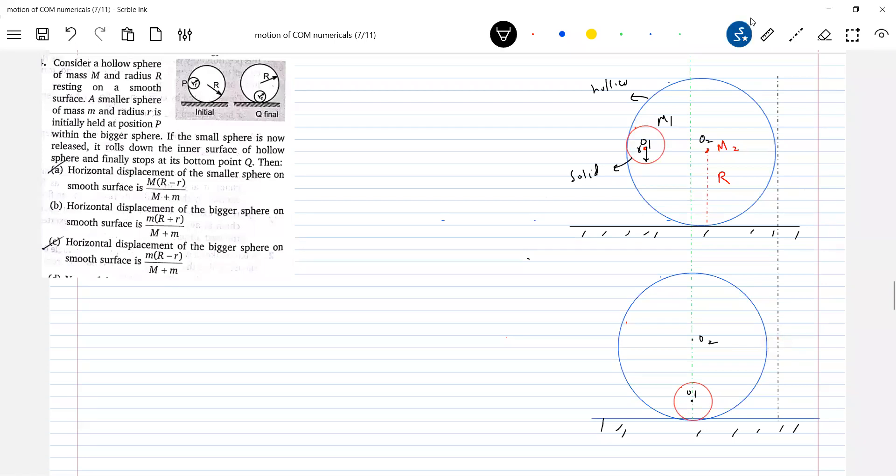So initially at what distance the O2 is? Say at a distance x you can write it. And finally at what distance it is? You can take anything. If you want to choose, you choose origin. You can choose this as origin. Let me take this as the origin. The O2 got displaced, you can see it.